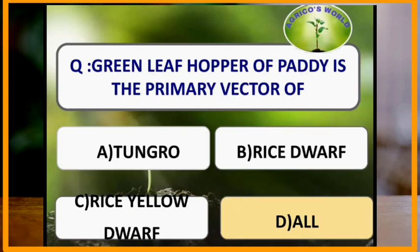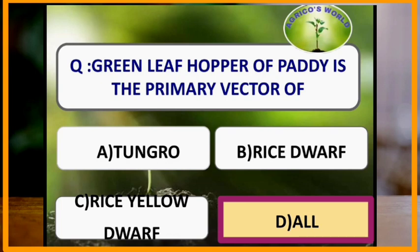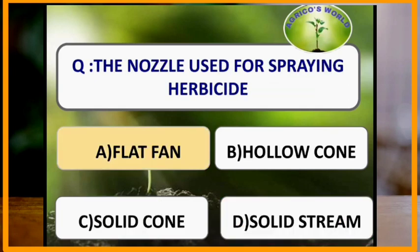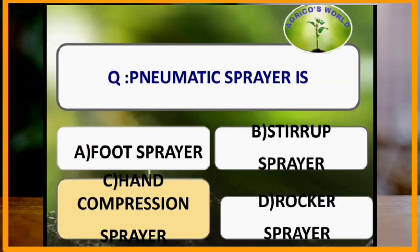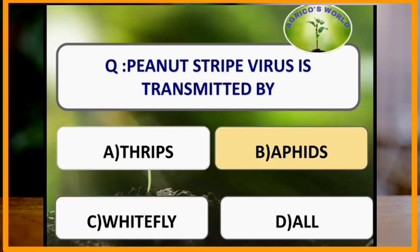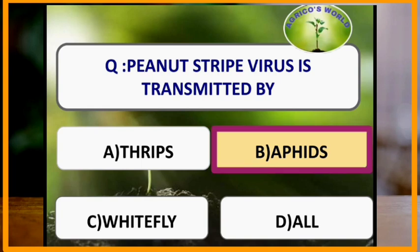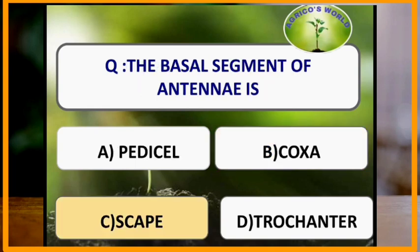The green leafhopper of paddy is the primary vector of tungro, rice dwarf and rice yellow dwarf. The nozzle used for spraying herbicide is the flat fan nozzle. Pneumatic sprayer is a hand compression sprayer. Peanut stripe virus is transmitted by aphids. The basal segment of the antenna is the scape.